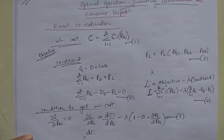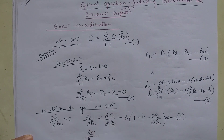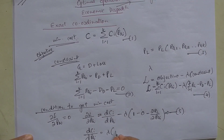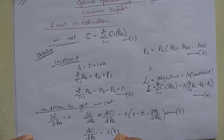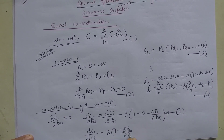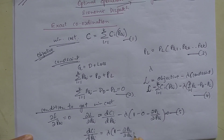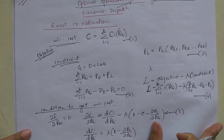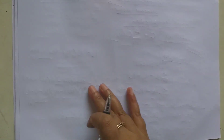On rearranging we get: dC_i / dP_Gi = lambda times (1 minus partial differentiation of P_L with respect to P_Gi). On further rearranging we get the next form.